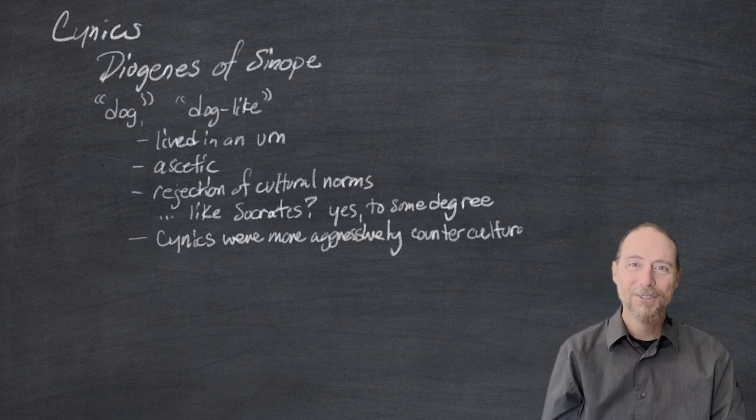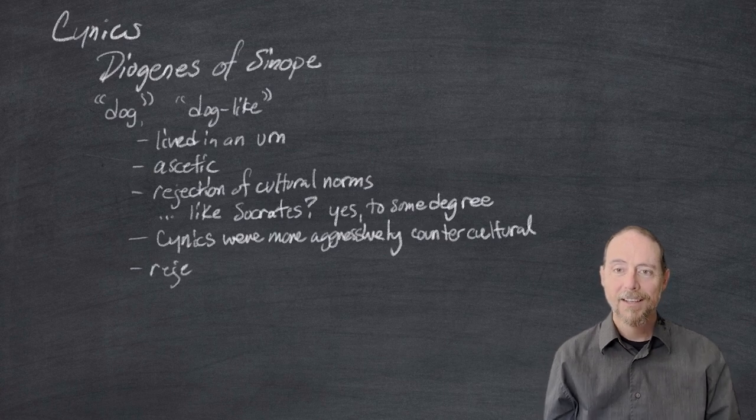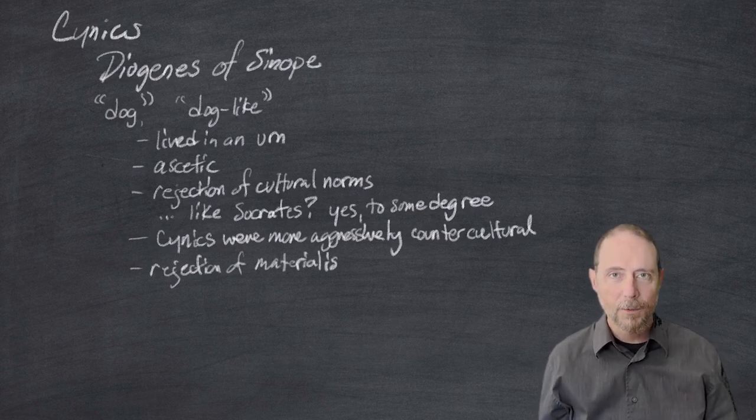You're blocking the sun. Alexander was apparently very impressed with this and said, if I was not Alexander, I would want to be Diogenes. This serves a number of different purposes.